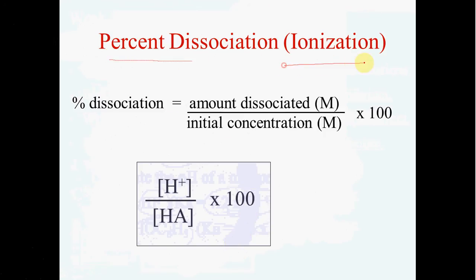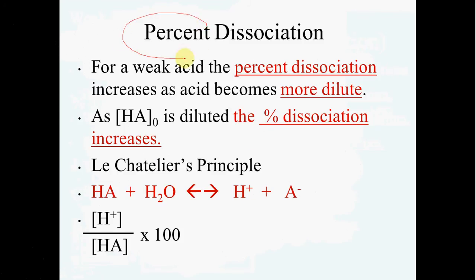Percent dissociation or ionization is another thing you'll be asked to find. Percent dissociation is simply the amount dissociated, which would be the hydronium ion, over the original weak acid times 100. One thing interesting about percent dissociation, if you have a weak acid, the percent dissociation will be greater as the acid becomes more dilute. Your molarity will go down, but your percent dissociation will go up. You can prove that mathematically or you can look at Le Chatelier's principle. If you were to add water, that would shift the reaction to the right, increasing the ionized form of the acid.